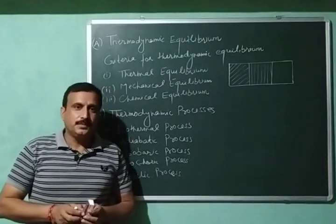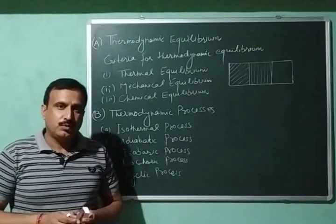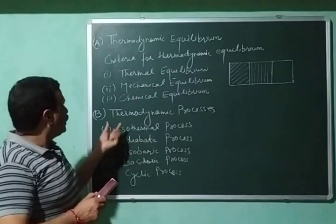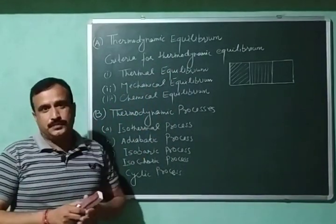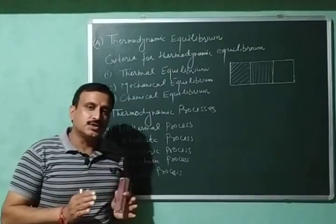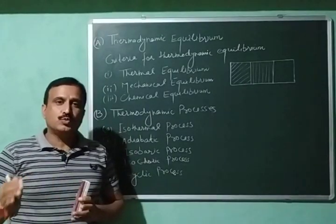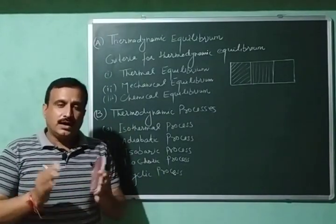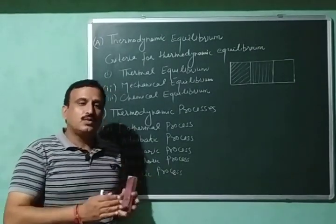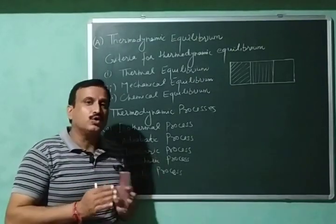Hello everyone, welcome back to my channel. Today I am going to discuss two important thermodynamic terms: thermodynamic equilibrium and thermodynamic processes. So let us start with thermodynamic equilibrium. A system is said to be in thermodynamic equilibrium if its macroscopic properties in different phases or in its different parts do not undergo any change with time, then the system is in thermodynamic equilibrium.